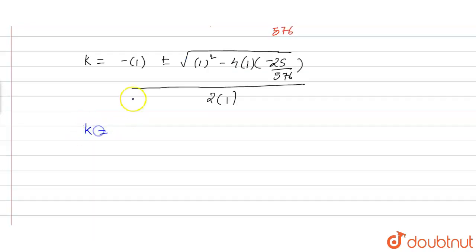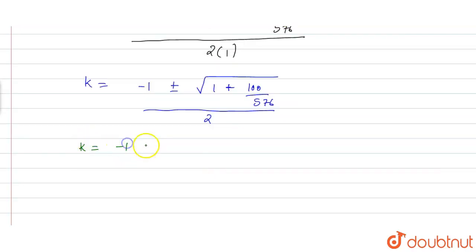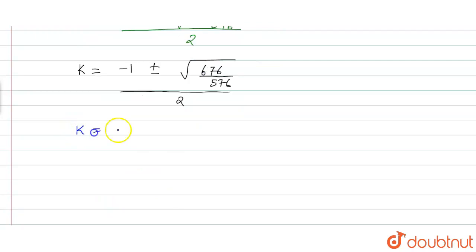So k is equal to minus 1 plus minus under root: 1 squared is 1, and minus minus gives plus 4 into 25 is 100 divided by 576, all upon 2. Taking LCM we get 576 as LCM, giving us 576 plus 100 divided by 576, all upon 2. So 100 plus 576 is 676, divided by 576, upon 2.